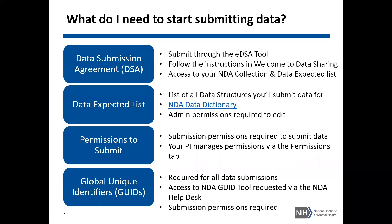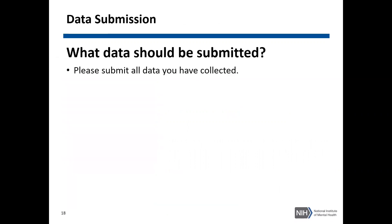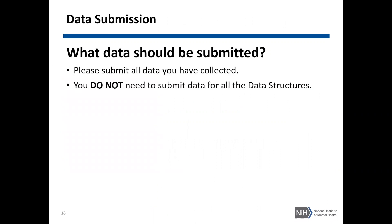To recap, the four items you need before you can start submitting data are the NDA data submission agreement, the data expected list, the permissions to submit, and global unique identifiers. Once you have all of these in place, you should submit all the data you've collected for your grant. You do not need to submit for all data structures every submission cycle — only for the data structures that are ready for submission and that you do have collected data for.